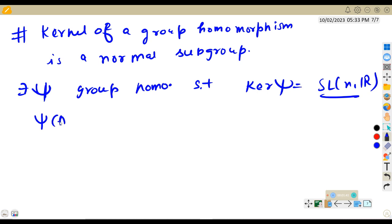The phi function is the determinant of A. Phi function is from GL(n,R) to the real numbers and it is defined as phi of A is determinant of A.